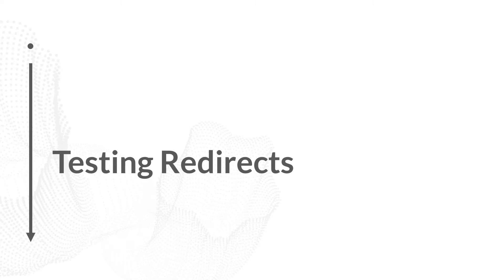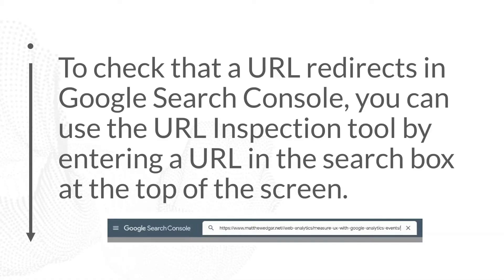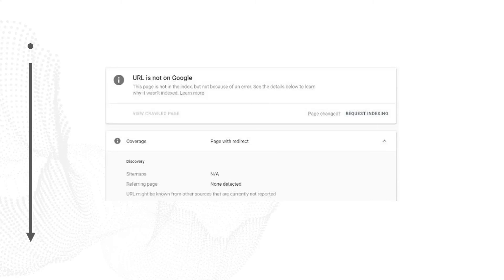Now that we've implemented our redirects, we want to know how to test them. Let's begin with testing in Google Search Console, available at google.com/webmasters. In Google Search Console, you want to check that a URL redirects by using the URL inspection tool at the top of the screen. Put in the URL that you're redirecting from, and once it runs its inspection, if the redirect is implemented properly, it should come back and say 'page with redirect' — meaning Google recognizes that this redirect exists on your website.